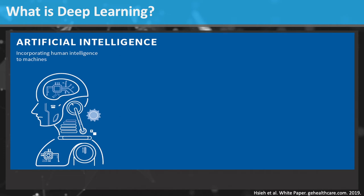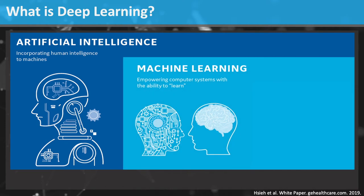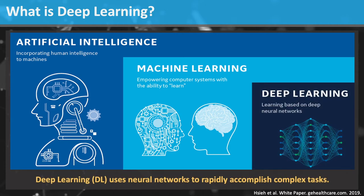Artificial intelligence is a broad field that refers to incorporation of human level intelligence into machines. This technically does not exist yet, though I and others often use the term AI more broadly. Machine learning is a subfield of AI that uses computer algorithms that improve automatically through experience. Deep learning is a further subset that uses neural networks to rapidly accomplish complex tasks.